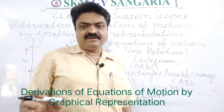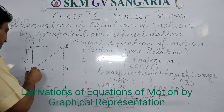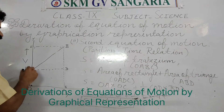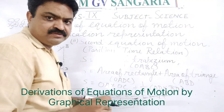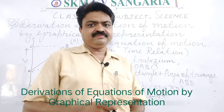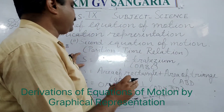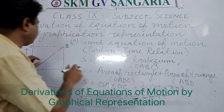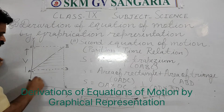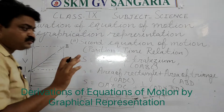The initial velocity is not zero — the object starts its velocity from this point, which is its initial velocity. For this, we will use mathematics. In geometry, you have read about the trapezium, so we will take the area of the trapezium. This trapezium covers two shapes: first is a rectangle, and second is a triangle.